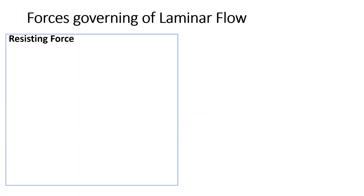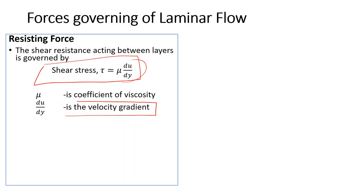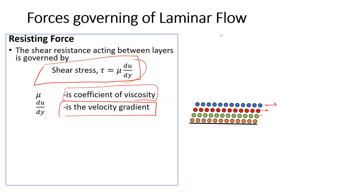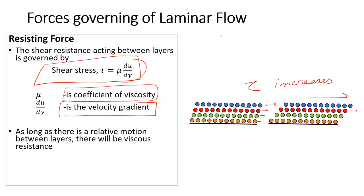The resisting force is the viscous force, governed by Newton's law of viscosity: the shear resistance between layers is tau = mu * du/dy, where mu is the coefficient of viscosity and du/dy is the velocity gradient. If one layer moves at a higher velocity than the adjacent layer, there will be shear stress. If the velocity difference between layers is larger, the shear stress increases.